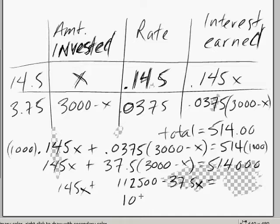And 145 minus 37.5 equals 107.5x, and we're going to subtract 112,500 from this side and we'll do the same from this side. So that's 112,500.